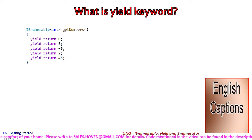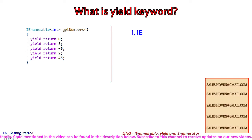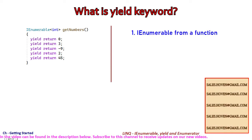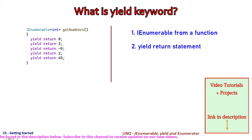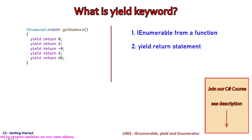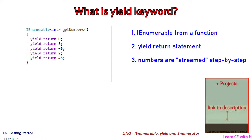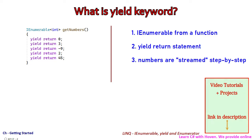An iEnumerable can be obtained from a function by using the yield keyword. Suppose we have to provide integers from a function as shown here. This function returns an iEnumerable, but there are multiple yield statements each of which returns an int. So this code might be confusing at first.